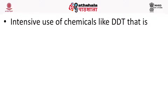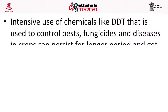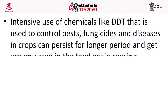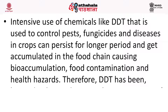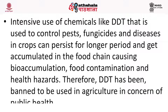Intensive use of chemicals like DDT, used to control pests, fungicides and disease in crops, can persist for longer periods and get accumulated in the food chain causing bioaccumulation, food contamination and health hazards. Therefore, such chemicals have been banned for use in agriculture in concern of public health.